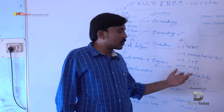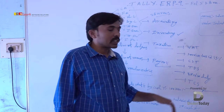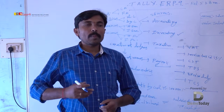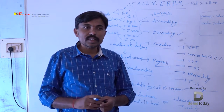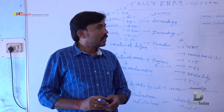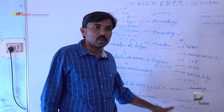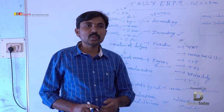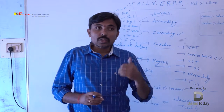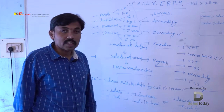Select the transaction-related voucher and pass the entry. Contra voucher is used for only two types of transactions: cash deposited into bank, and cash withdrawn from bank for office use. Whenever these two transactions occur in your business, the entries are recorded in Contra voucher. Payment voucher is used for creation of all payment transactions — cash going outside the business, either cash or cheque. Examples: salaries paid to staff by cash, rent paid by cash, electricity bill paid by cash.